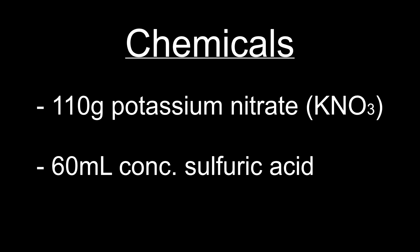For this experiment, you only need two chemicals really: 110 grams of potassium nitrate and 60 milliliters of concentrated sulfuric acid. The potassium nitrate can be swapped out for another nitrate salt such as sodium nitrate. However, you should not use ammonium nitrate because one of the products produced will be ammonia gas which can neutralize the nitric acid that you produce.